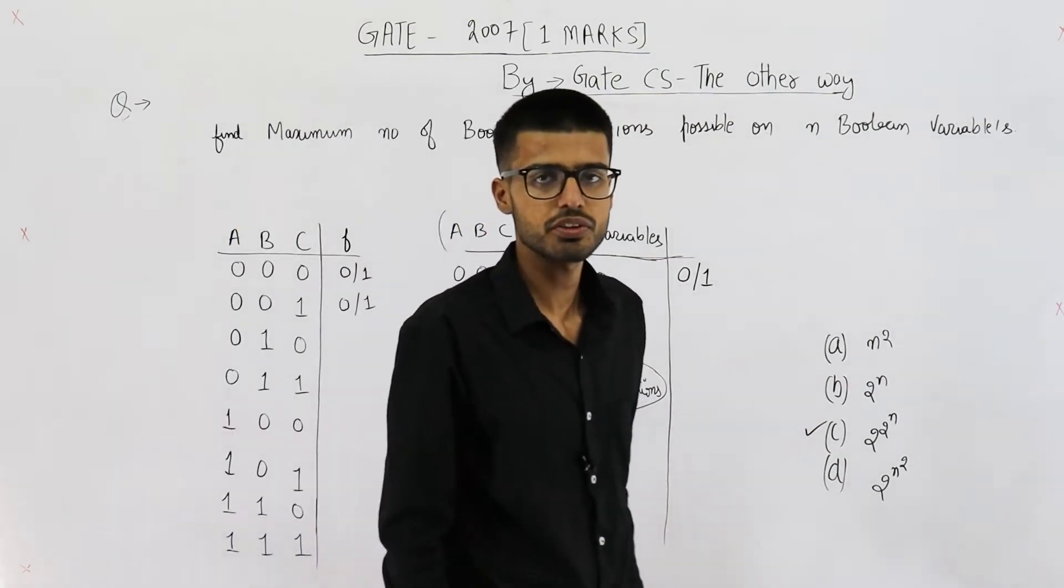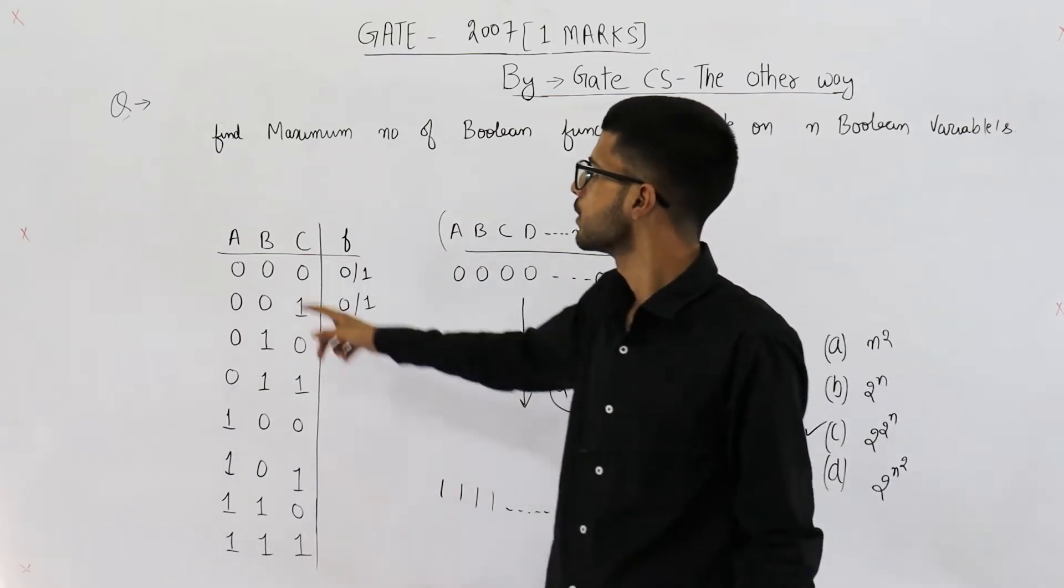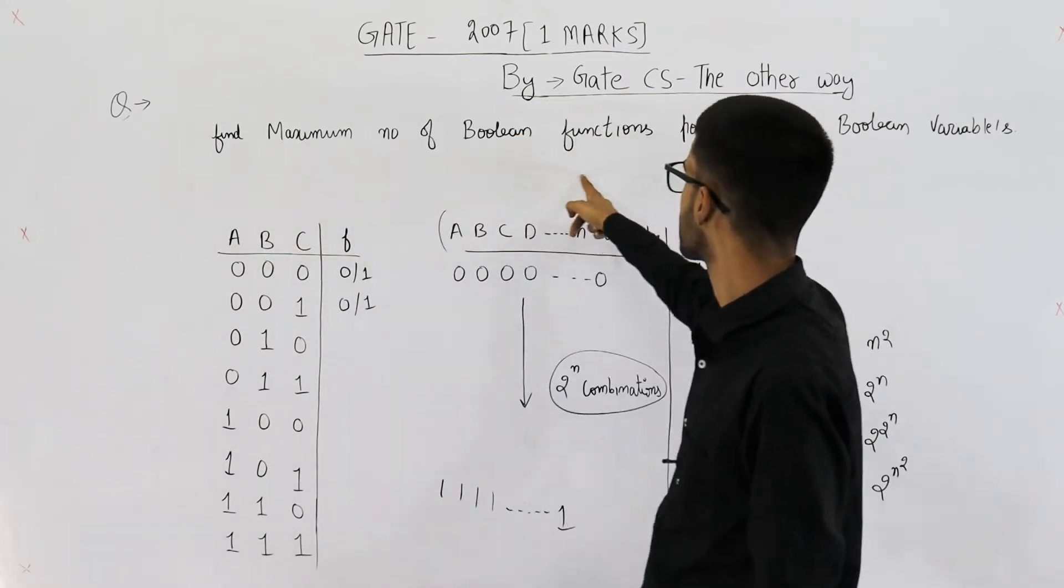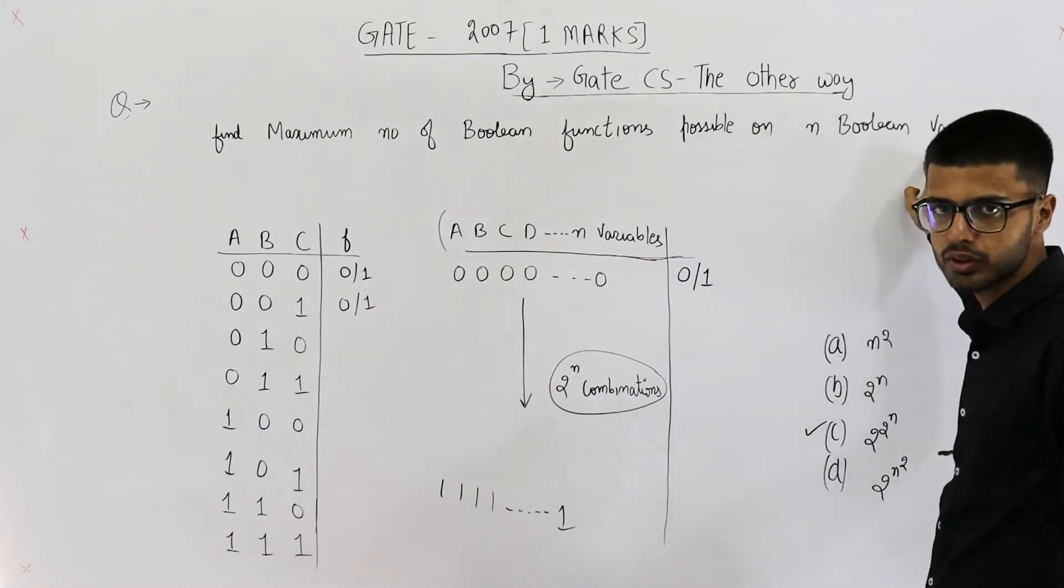Hello people, welcome back. This is a question from gate 2007 exam. It's for one mark. The statement is find the maximum number of boolean functions possible on n boolean variables.